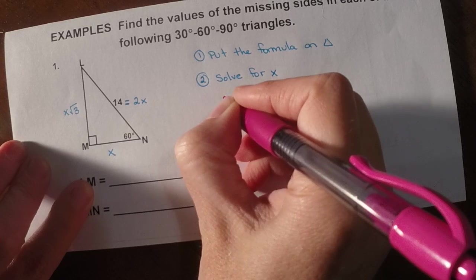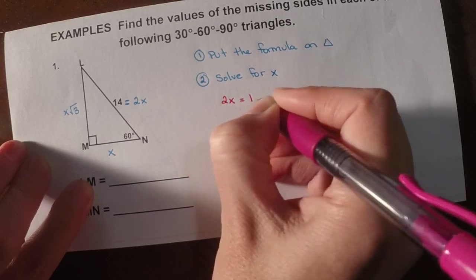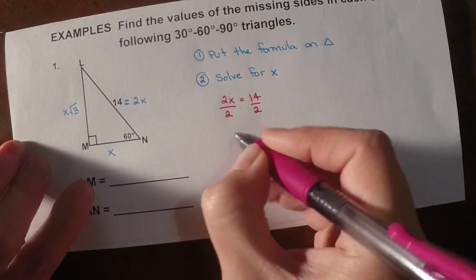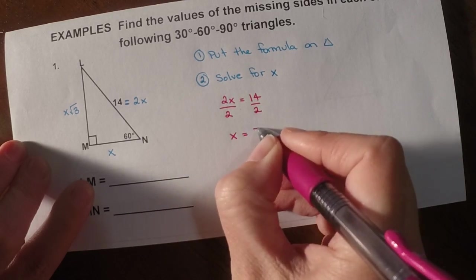So to solve, we have 2x equals 14. Well, that's a pretty easy one to solve. If I divide by 2, I get that my x value is 7.